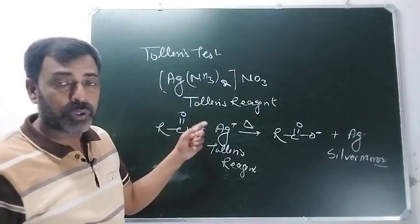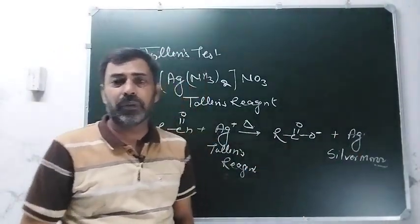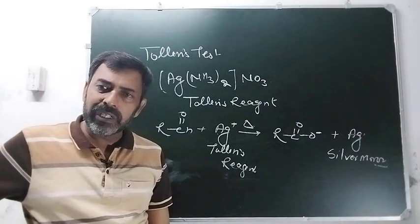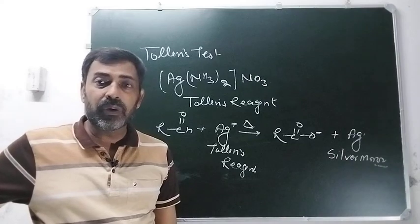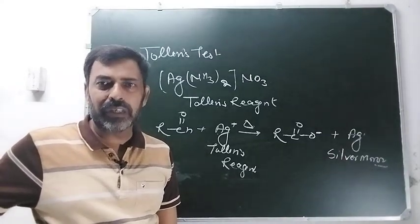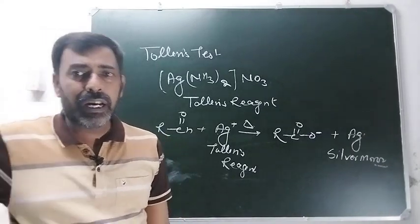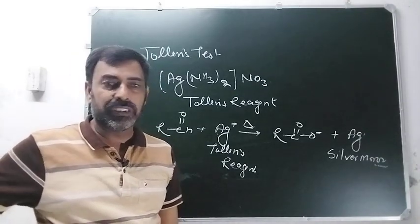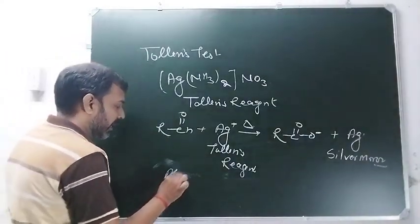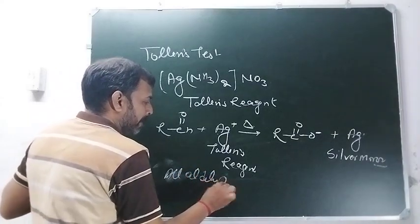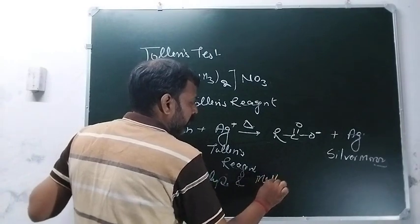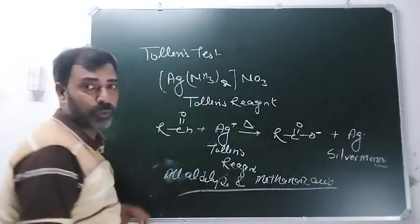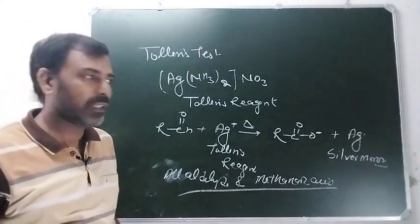अगर aldehydes को Tollens reagent के साथ treat करेंगे तो silver mirror का formation होता है। So whether all the aldehydes give the Tollens test? Surely all the aldehydes give the Tollens test including benzaldehyde। Not only the aldehydes but also methanoic acid gives the Tollens test। तो कौन-कौन देता है Tollens test: all aldehydes and methanoic acid।